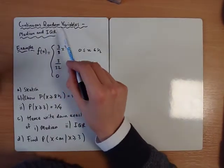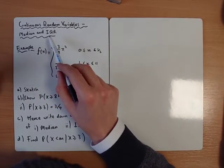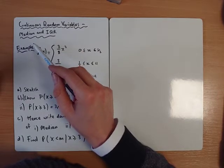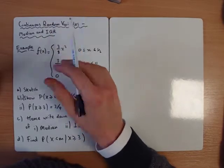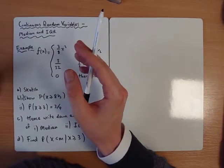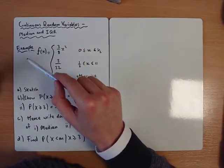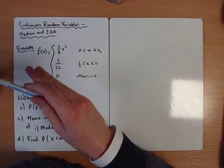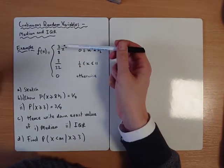In this video we're going to take another look at continuous random variables, but we're going to start to think about the median and the interquartile range. Obviously we know about the median already from GCSE - the median is just the middle value, and what that means in this context is it's got to be 50% of the way through the data. We know that the area represents the probabilities, so if it's halfway through, the area to the left would be 0.5, and the area to the right would be 0.5.